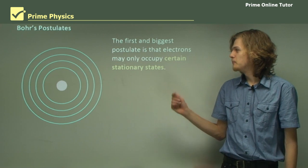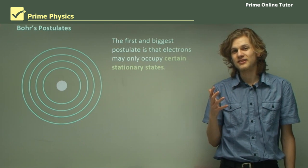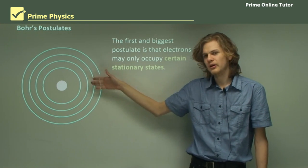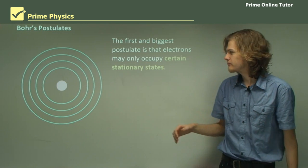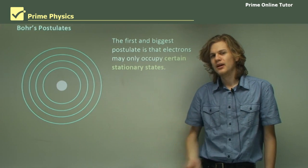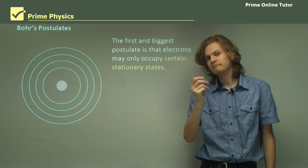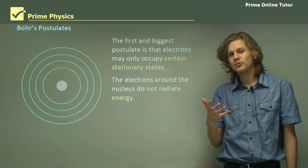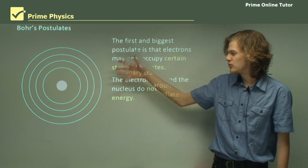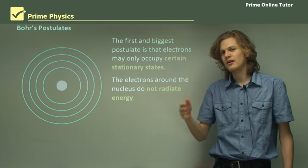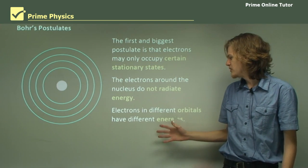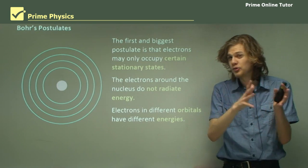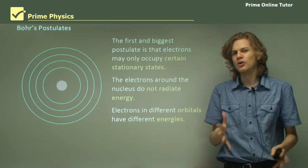So the first and biggest postulate is that electrons may only occupy certain stationary states. They're not just orbiting around a nucleus, but they have to be at certain energies around the nucleus. They can't be anywhere in between, and that's sort of the main quantum physics-y bit. The electrons around the nucleus do not radiate energy, as classical physics would have them do, but instead they're sort of stuck at each state, and they can't move in between. So electrons in different orbits have different energies. The lowest orbit will have the lowest energy, and it won't be able to spiral inwards or outwards. It can only jump.